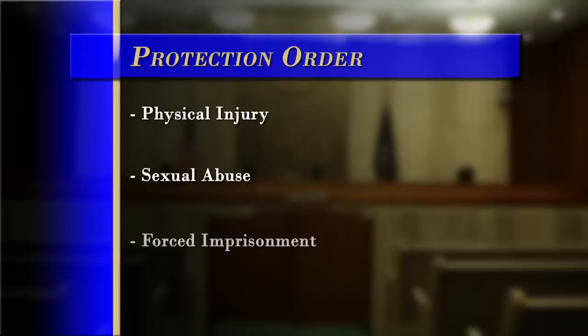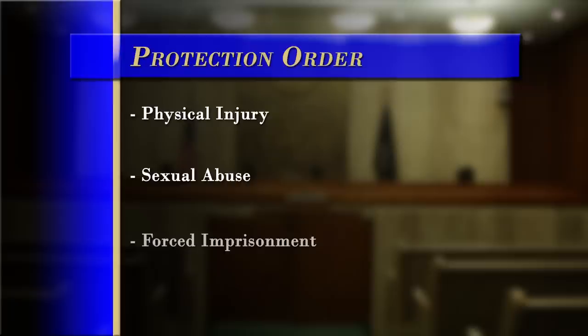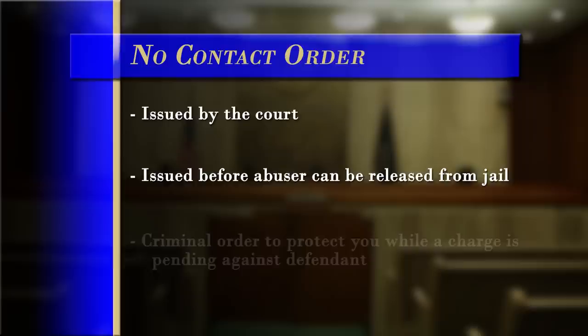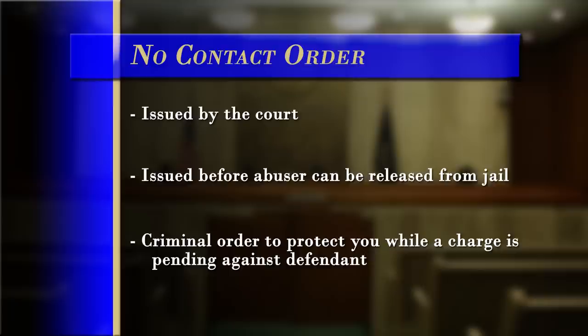The court can only issue a protection order when there is evidence of physical injury, sexual abuse, forced imprisonment, or a threat of this violence occurring. A criminal no contact order is another type of order issued by the court to protect you from an abuser. If someone has hurt you and is arrested, a no contact order may be issued before the abuser can be released from jail. The no contact order is not the same as a protection order — it is a criminal order meant to protect you while the criminal charge is pending against the defendant. Even if there is a no contact order, you can file a petition for a civil protection order.